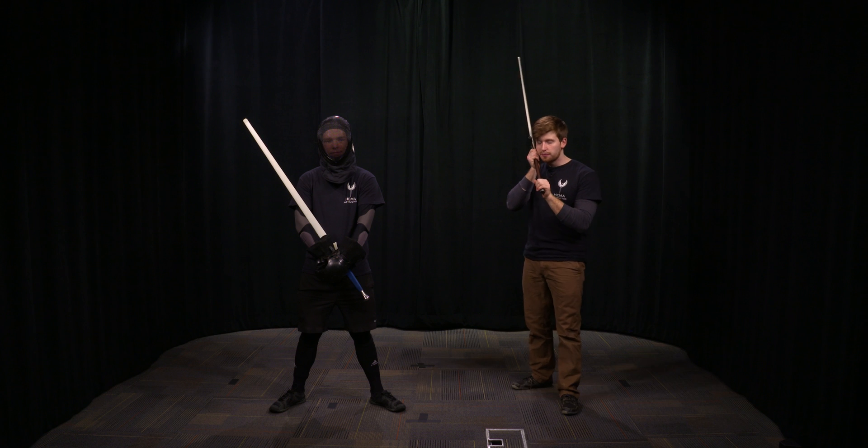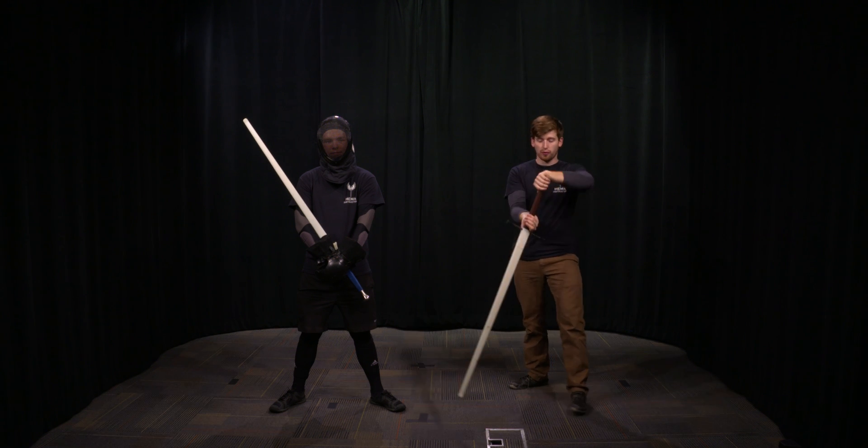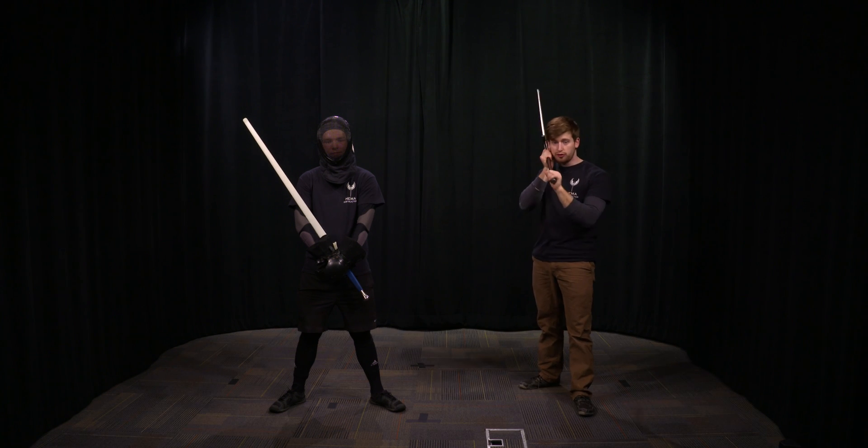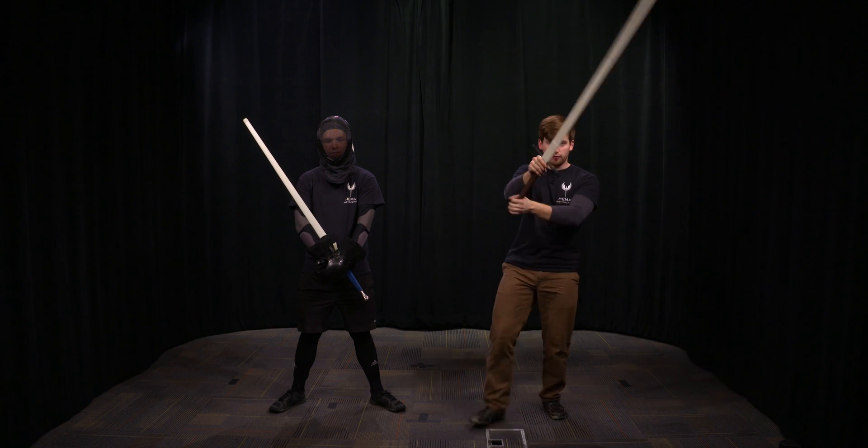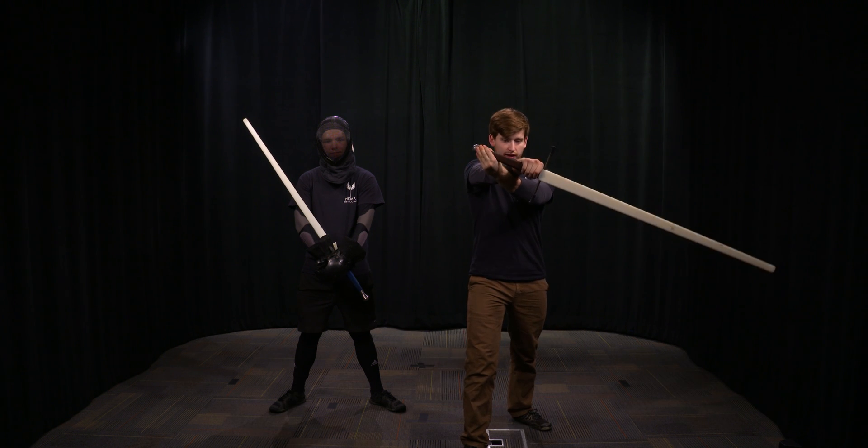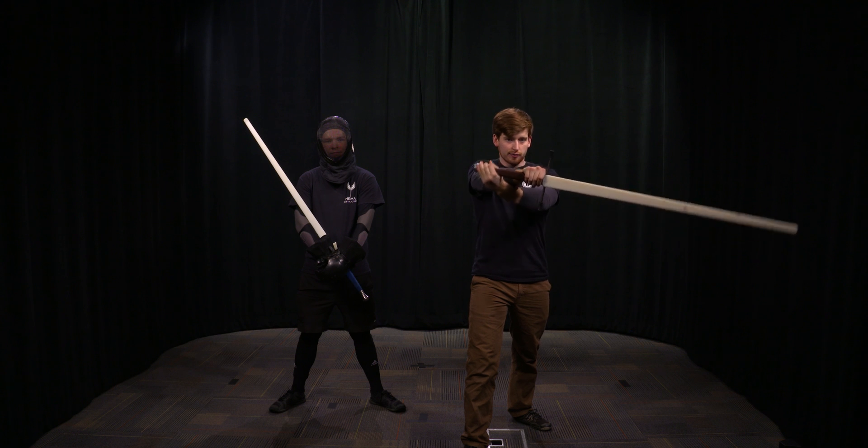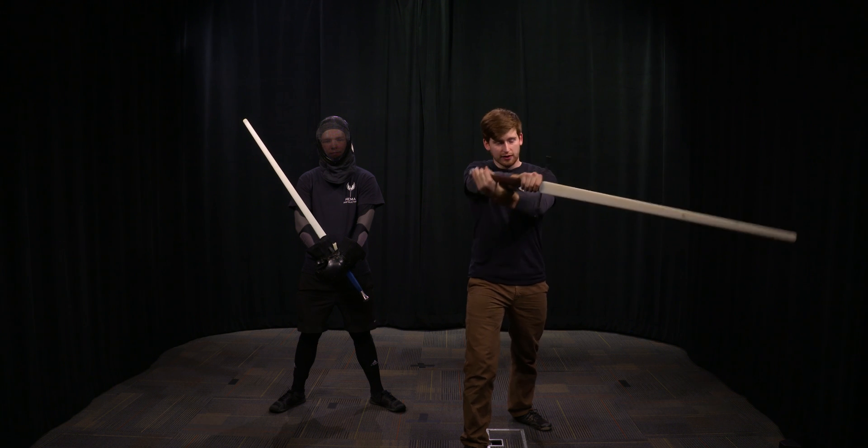It's called the Crooked Cut because from Vam Tak, or Schrenk Cut, we're going to be cutting crooked across our body. So from Vam Tak, I'm going to cut forward, I'm going to twist my hands so that they're crossed, and I'm going to cut down at an angle to my side.